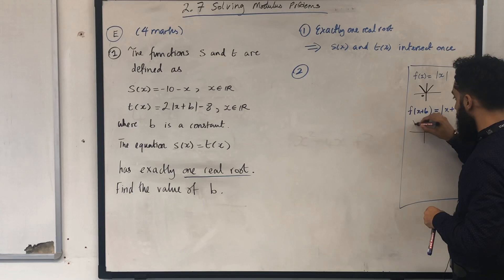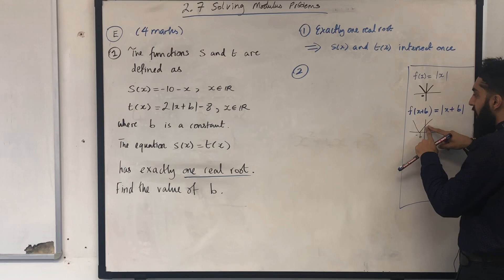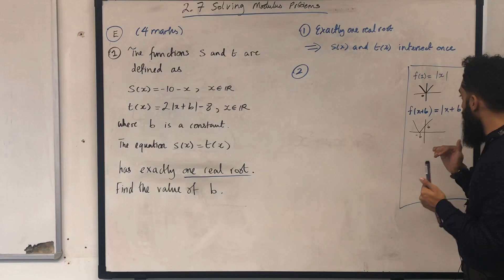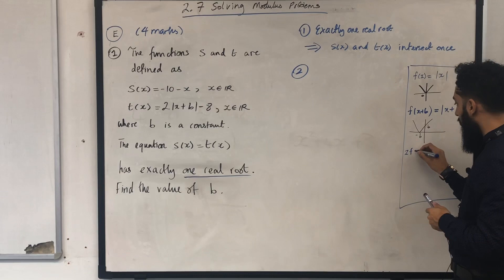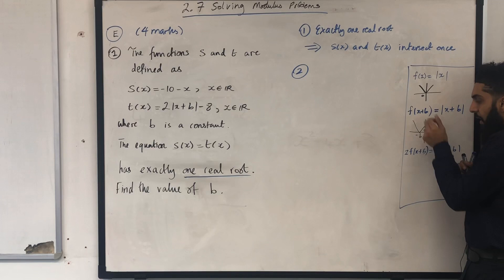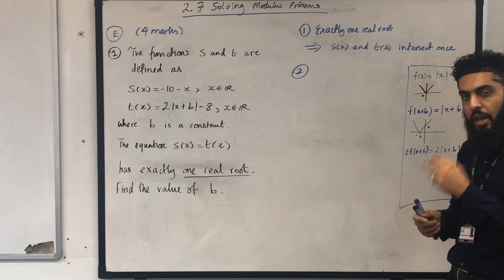The y-intercept is calculated by putting x equal zero, giving modulus of b which is b. Now I want the graph of 2 modulus of x plus b. I'm looking at 2 f of x plus b, which is equivalent to 2 modulus of x plus b.